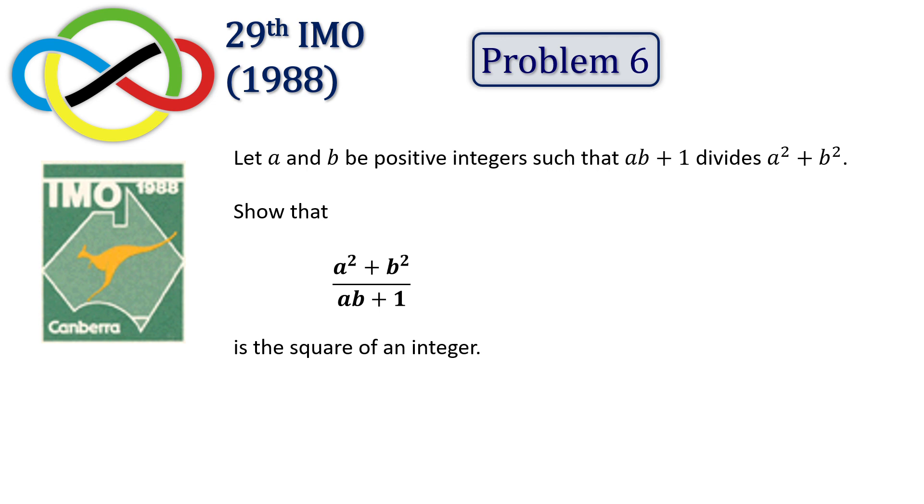Despite its difficulty, the problem was submitted to the jury of the 29th IMO, where it was marked with a double asterisk, indicating that it was a super hard problem and possibly too difficult to include. After considerable debate, the jury decided to present it as Problem 6.